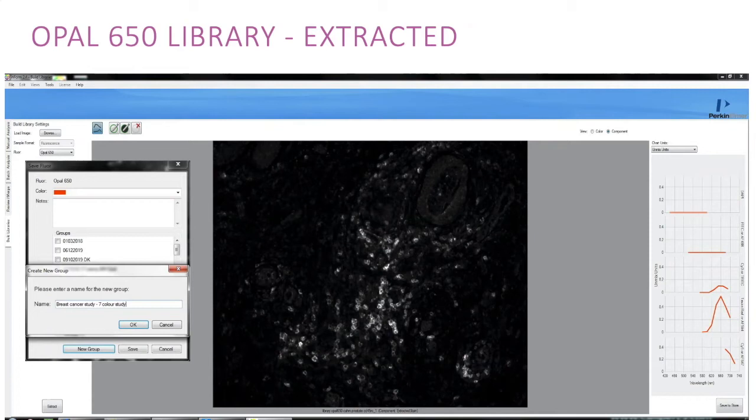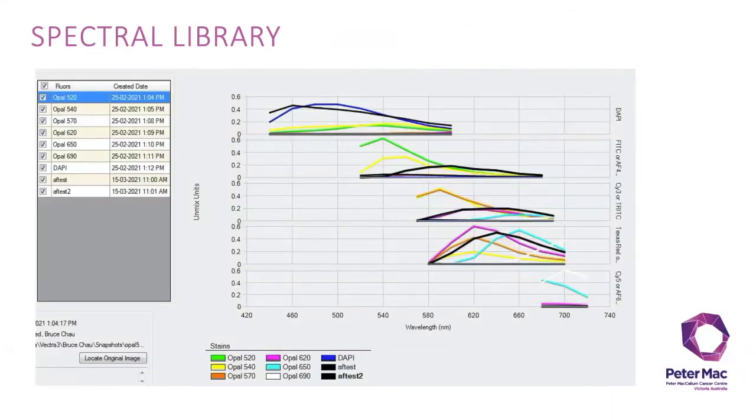You need to repeat this step for each of your opal fluorophores and your DAPI and autofluorescence slides. The following slide shows a standard spectral library generated in InForm with DAPI, FITC, Cy3, Texas red and Cy5 filters, and good spectral emission separation in each graph.